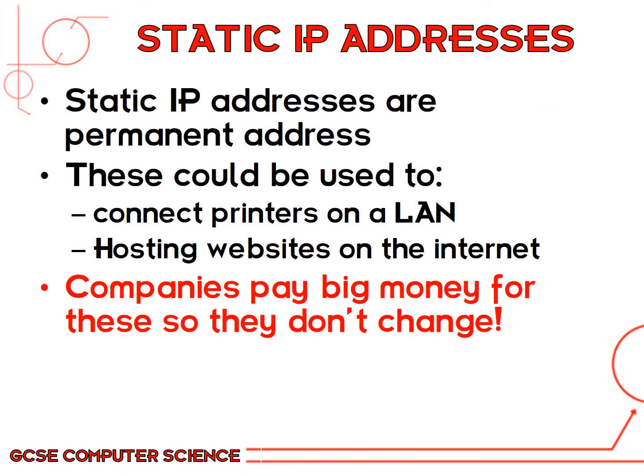There are two different types of IP address. The first is a static IP address — static means it does not move or change, so a static IP address is a permanent address. This would usually be used for a printer on a local area network, or the best example is hosting a website on the internet. Big companies like Facebook and YouTube pay big money for these static IP addresses so that they don't change.